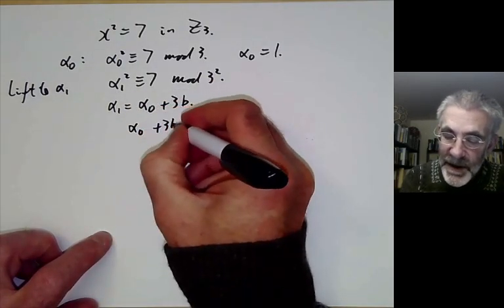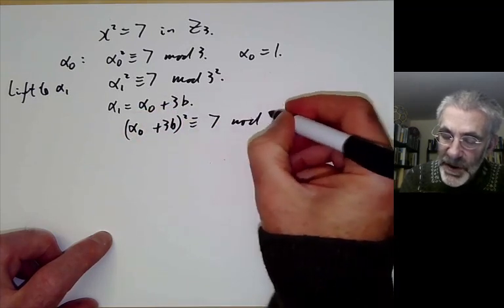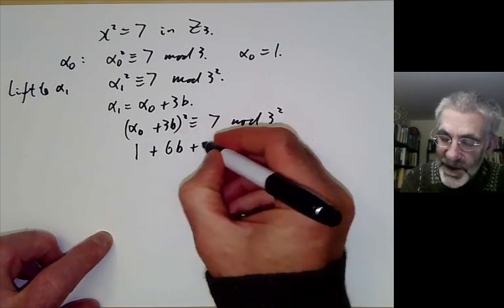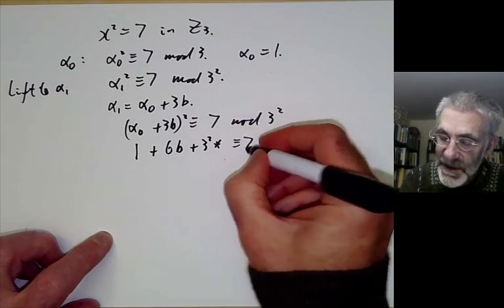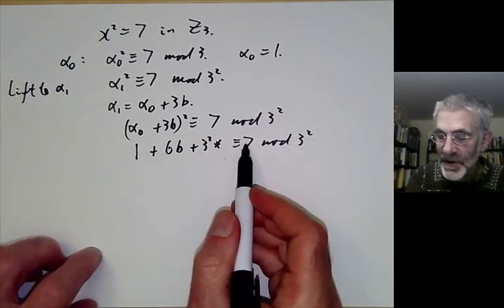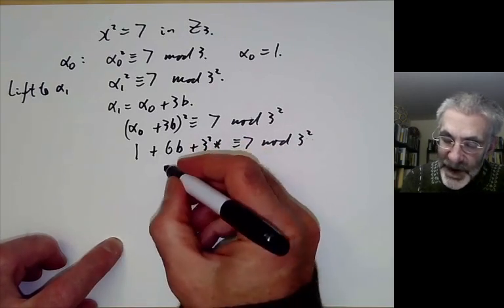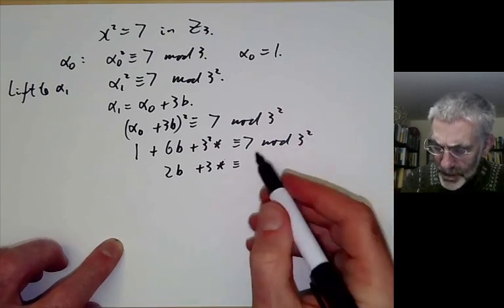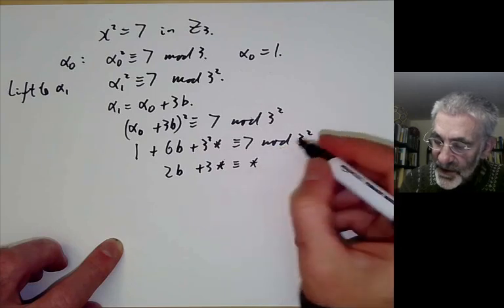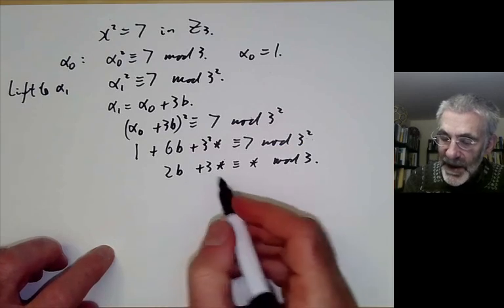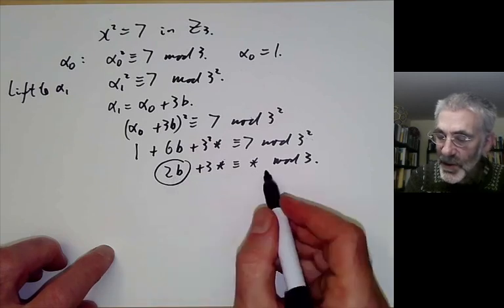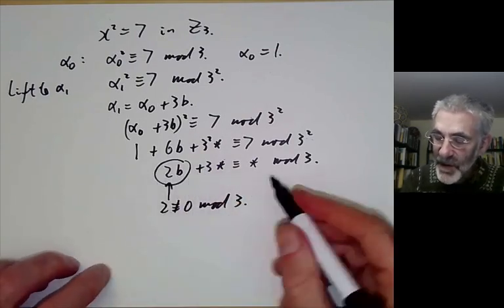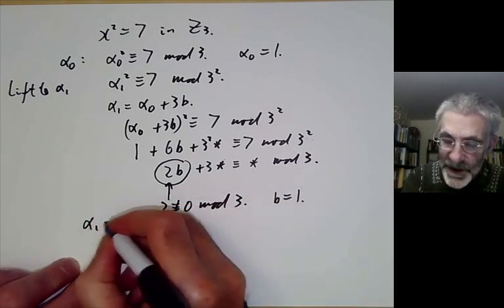We want (alpha_0 + 3b)² ≡ 7 mod 3². Since alpha_0 = 1, this says 1 + 6b + 3²·(something) ≡ 7 mod 3². Since 1 ≡ 7 mod 3, we divide through by 3 and find 2b + 3·(junk) ≡ (something) mod 3. We need to solve 2b ≡ (something) mod 3, which we can do because 2 ≢ 0 mod 3. Solving for b, we find b = 1, so alpha_1 = 1 + 3·1 = 4.